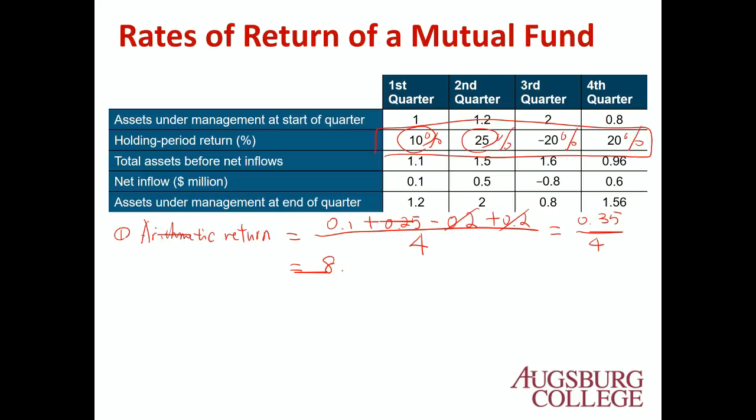That gives us 8.75%. So the arithmetic average return is 8.75%.